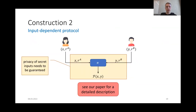We then have a second construction which yields input-dependent protocols, where the parties directly use their secret inputs for the computation. We need to take special care that the privacy of these secret inputs is still guaranteed. For details, I refer to our paper.